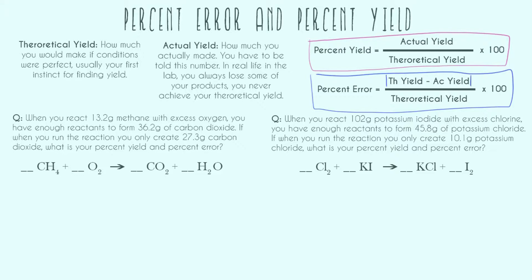Let's go ahead and define the theoretical and actual yield just to make sure we 100% understand what we're doing. Our theoretical yield is just how much you would make if conditions were perfect. I like to say this is usually your first instinct for finding yield. So students usually figure out, I have this many reactants, I can go ahead and make this much, that's what my yield is. Yes, that's a yield and it's the theoretical yield. It's saying if you didn't lose anything, if nothing went wrong, this is how much you could technically make.